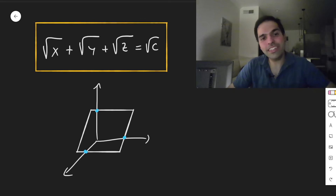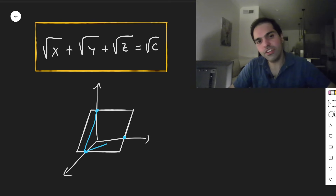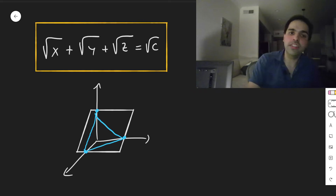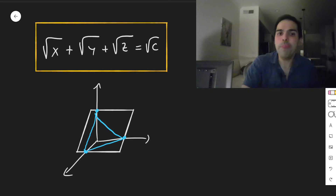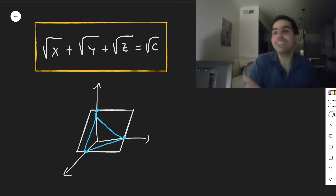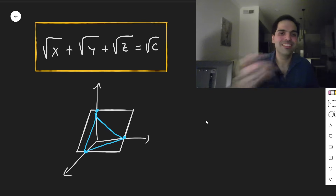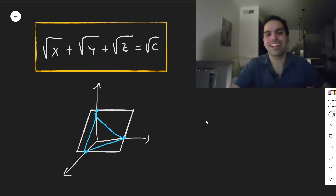And in particular, this has a nice interpretation. If you consider the triangle connecting those three intercepts, then it turns out the center of mass — the barycentre in French — is constant. It doesn't depend on the point at all. How cool is that?